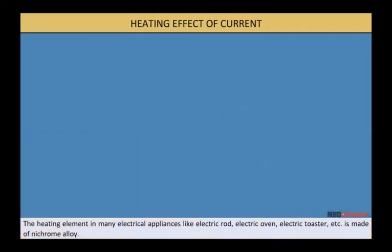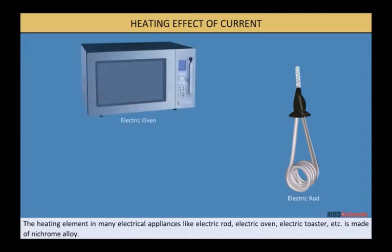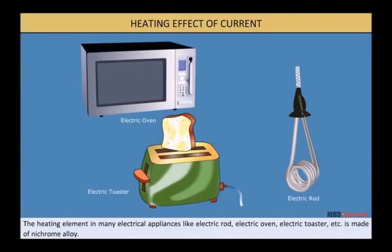The heating element in many electrical appliances like electric rod, electric oven, electric toaster, etc. is made of nichrome alloy.